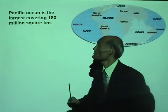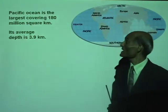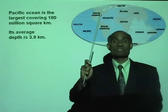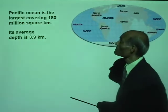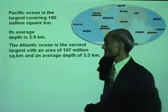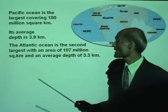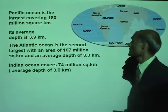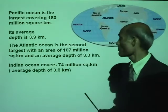The Pacific Ocean is the largest, covering 180 million square kilometers, and its average depth is 3.9 kilometers — almost as deep as Mount Everest is tall. The Atlantic Ocean is the second largest, at 107 million square kilometers, with an average depth of 3.3 kilometers. The Indian Ocean covers 74 million square kilometers, with an average depth of 3.8 kilometers.